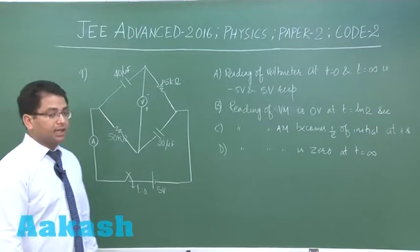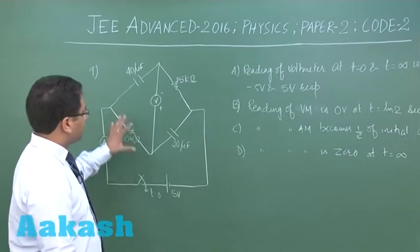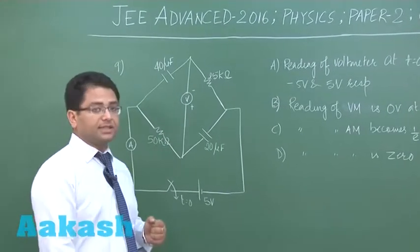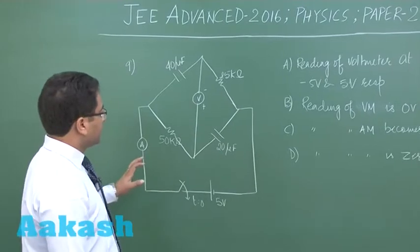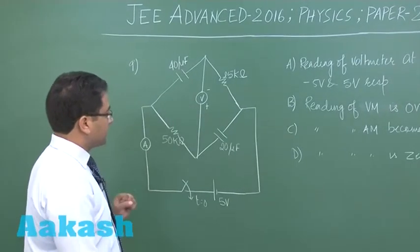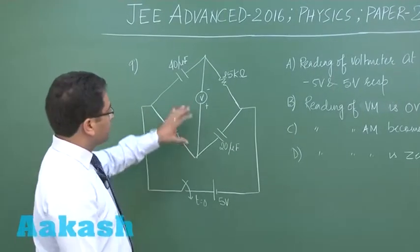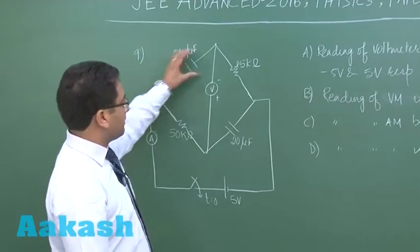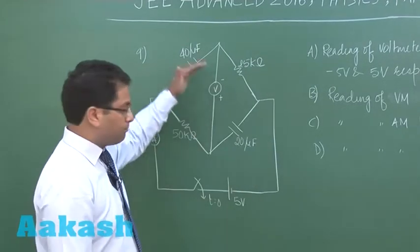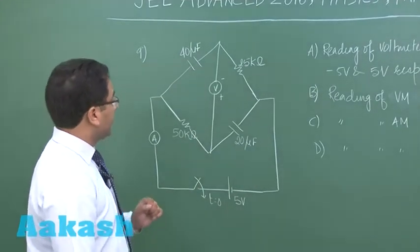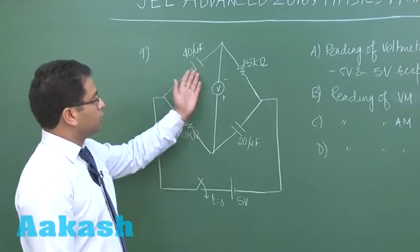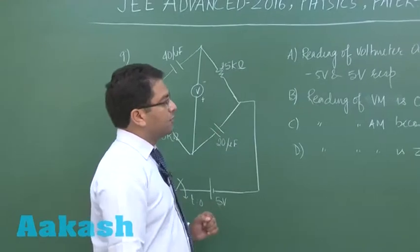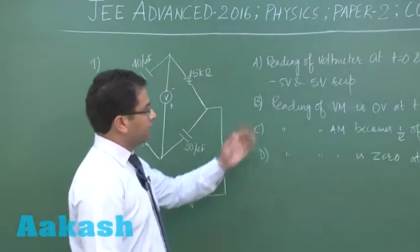Question number 9 is another beautiful question made from an RC circuit — it is all about a charging-discharging circuit. It is a nice combination. The voltmeter and ammeter are ideal. If the voltmeter is ideal, it is an open circuit, so the upper circuit and the lower circuit are independently parallel. The time constant for both circuits is 1 second each. We need to find the reading of the voltmeter at t = 0 and t = ∞.